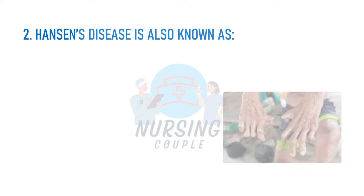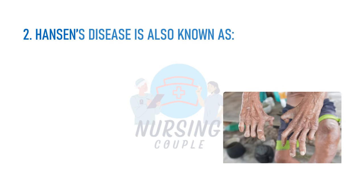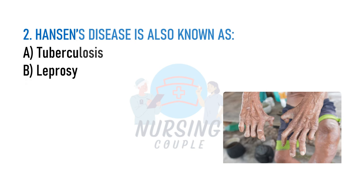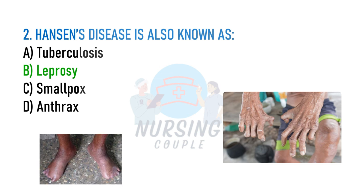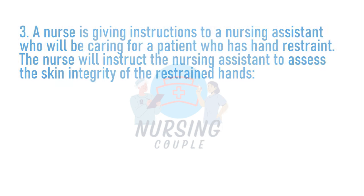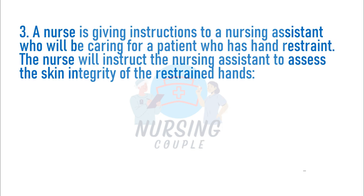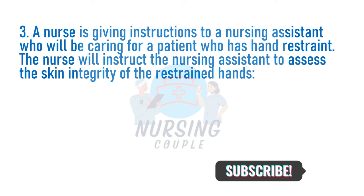Hansen's disease is also known as: A. Tuberculosis, B. Leprosy, C. Smallpox, D. Anthrax. The answer is Option B: Leprosy. Mycobacterium leprae was discovered by Dr. Gerard Henrik Armour Hansen, so leprosy is also known as Hansen's disease.